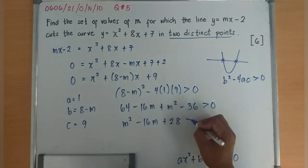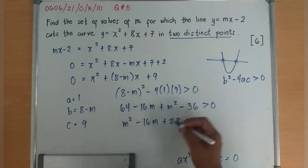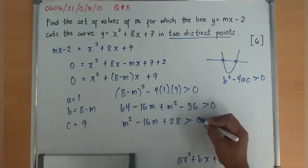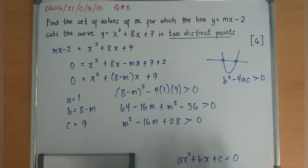So I have m² - 16m + 28 is greater than 0.